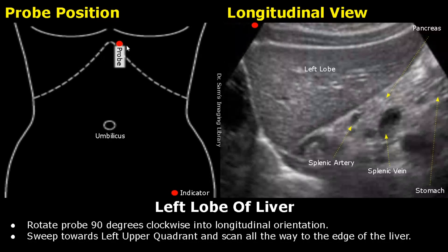Next, rotate the probe 90 degrees clockwise. Now the indicator is directed towards the patient's head and the probe is in longitudinal orientation. Move a little to the left of the midline and scan the left lobe thoroughly all the way to the edge of the liver. You will also see the pancreas posterior to the liver.